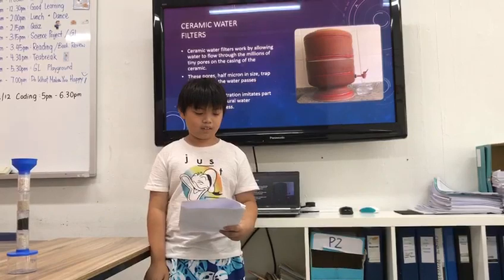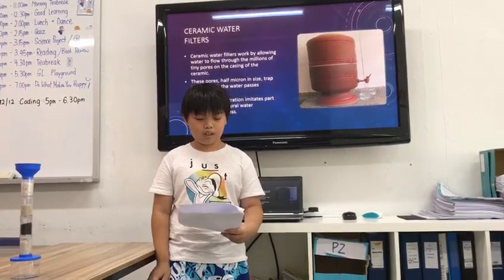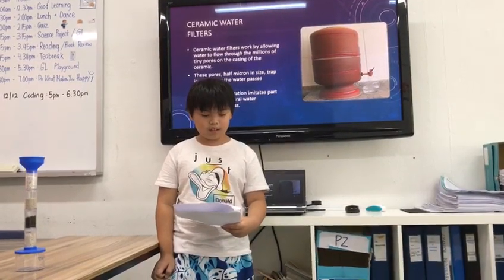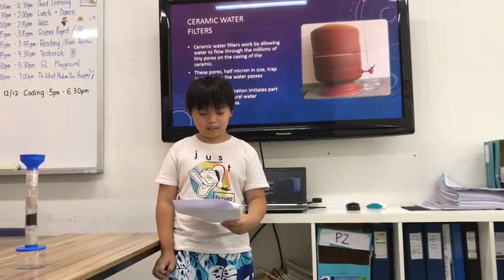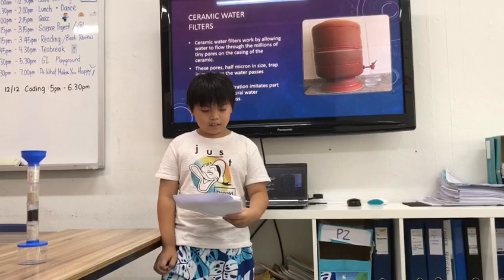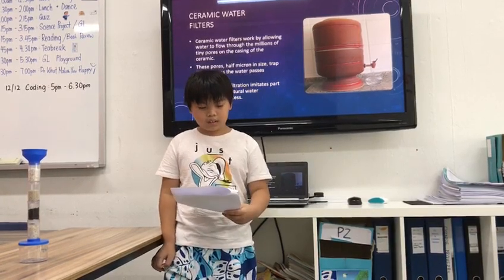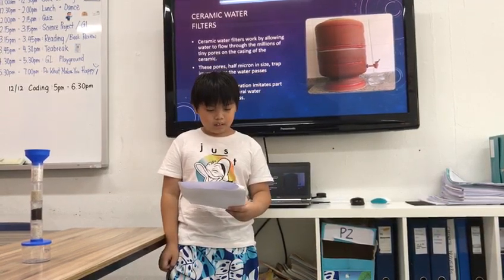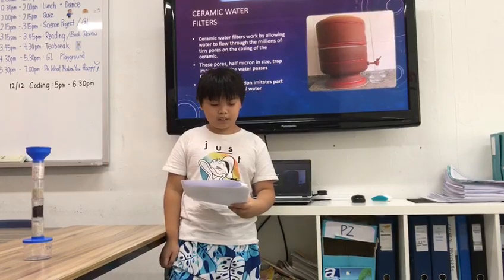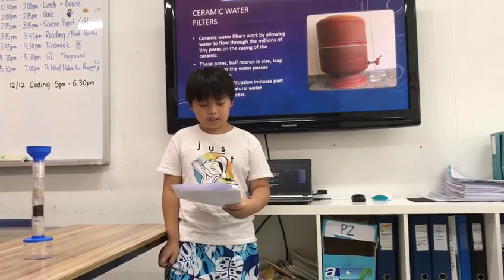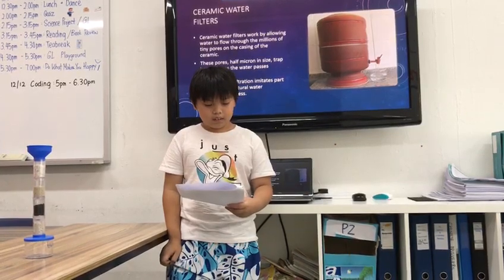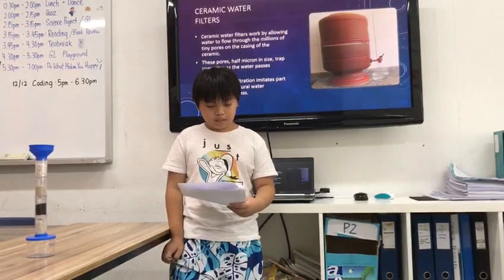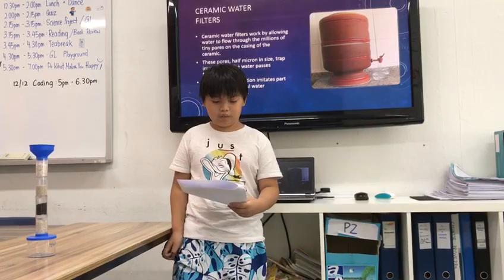Ceramic water filters work by allowing water to flow through the billions of tiny pores of the casing of the ceramic. These pores have micron-sized threads, and as the water passes through them, this system of filtration removes impurities from natural water.